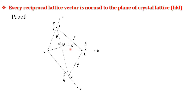So d* hkl is along the normal, and any vector lying in the plane — such as vector c or vector a — lies in the plane. We take the dot product of the two vectors, and if that dot product vanishes, then we have proven that the reciprocal lattice vector must be normal to the plane of the crystal lattice.